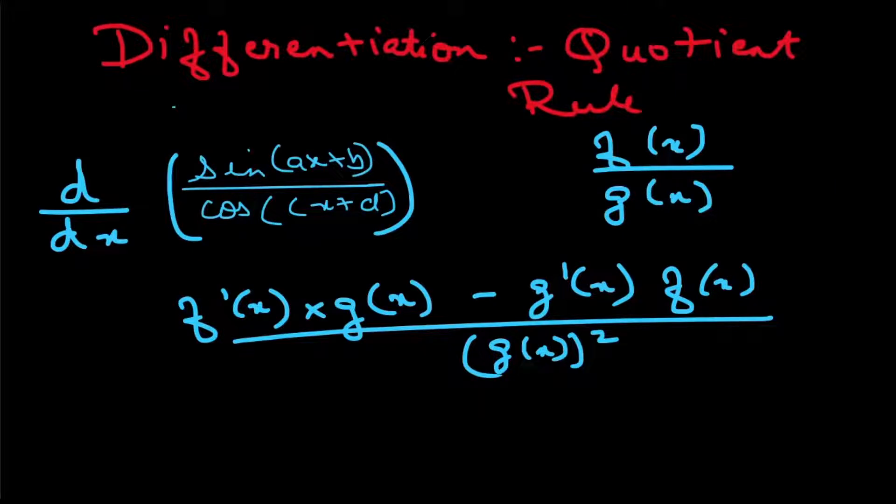We know that quotient rule is used when there's a function which is in the form of f(x) divided by g(x). So basically if you have two functions which are divided by each other, that's why the word quotient, which means when you divide what is the quotient of division, that is when this rule is applicable.